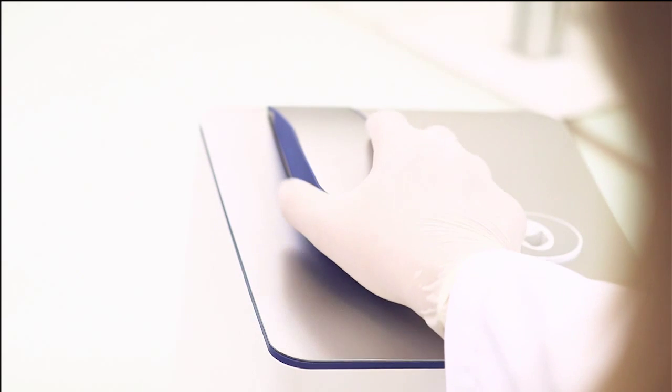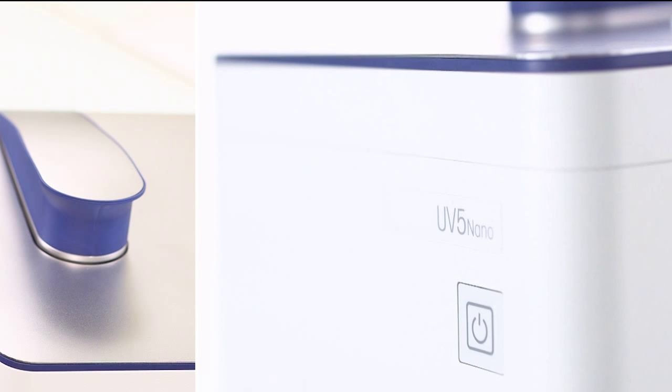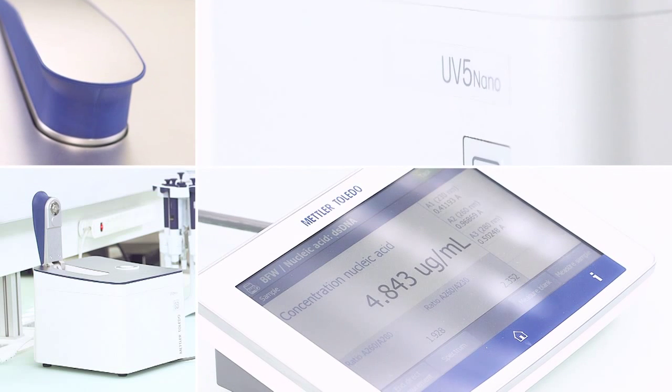During the measurement, the arm cannot be moved as it is securely locked by magnetic attraction. The UV5 Nano automatically selects the optimal measurement and displays the result.